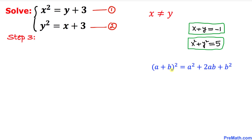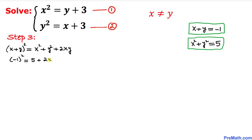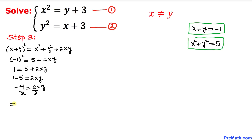Now let's recall the formula for a plus b squared. In terms of x plus y squared, this can be written as x squared plus y squared plus 2 times xy. Replacing x plus y with negative one and x squared plus y squared with 5, we get negative one squared equals 5 plus 2xy. So 1 equals 5 plus 2xy. Moving 5 to the other side and dividing both sides by 2, xy turns out to be negative 2.